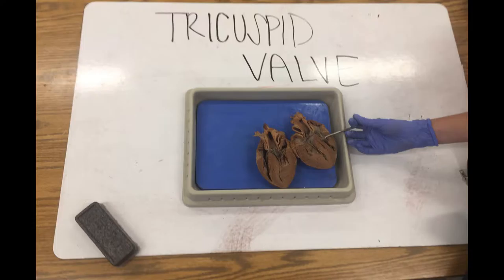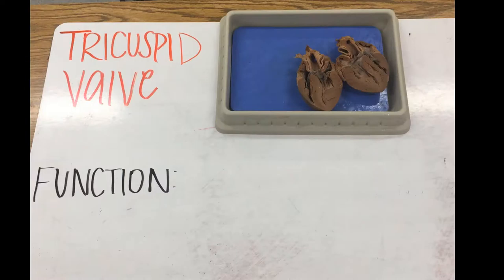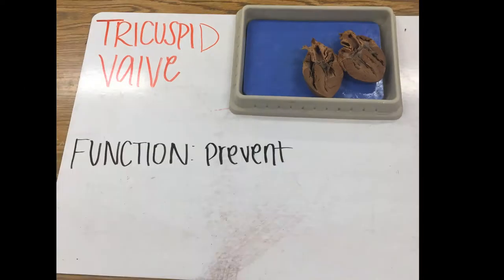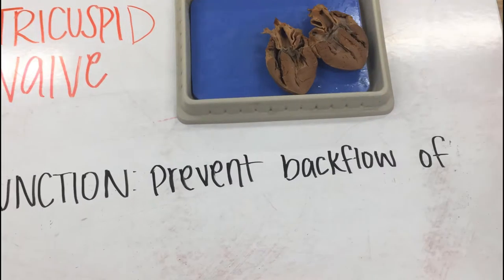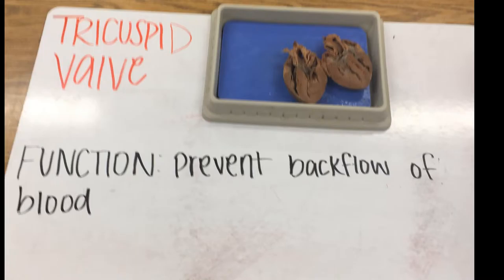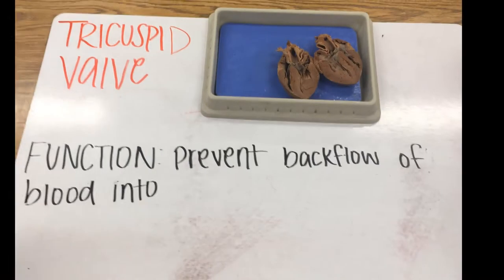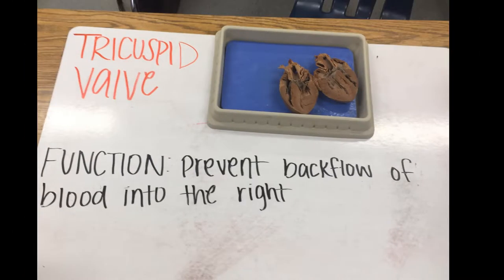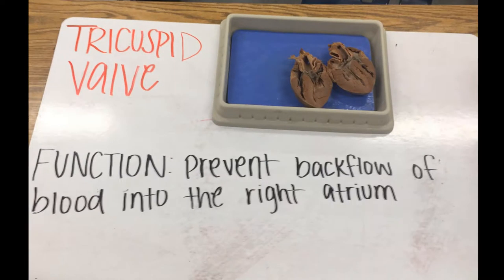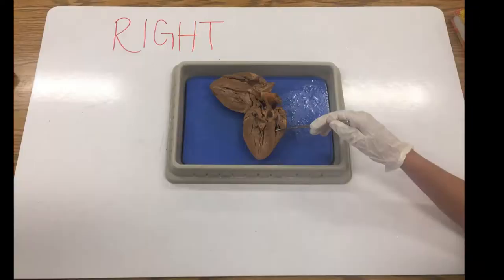The tricuspid valve is there to prevent backflow of blood into the right atrium. After flowing through the tricuspid valve, the blood is then finally into the right ventricle.